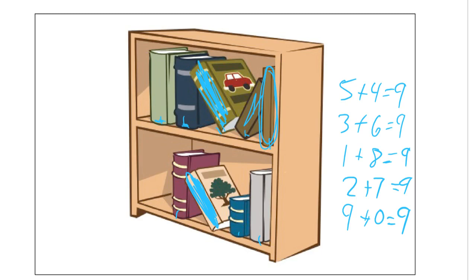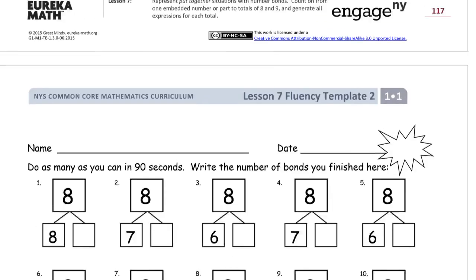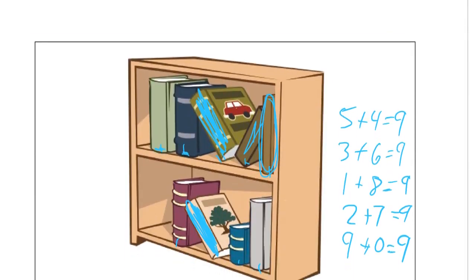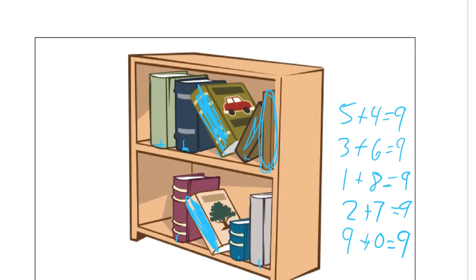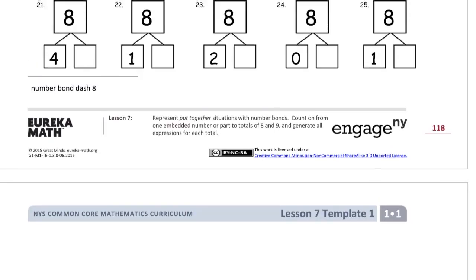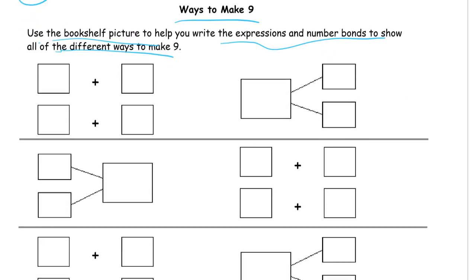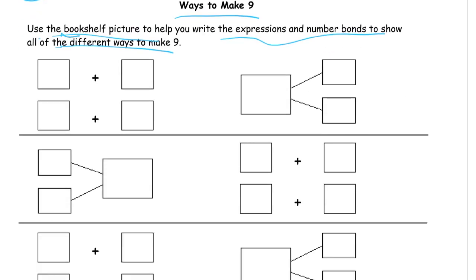And that can just get you started on this. And you can use those expressions, those number sentences we just wrote, 5 and 4, 3 and 6, 1 and 8, 2 and 7, 9 and 0. Or any other way you can find a sort to make those combinations. You might not need the picture to do this. But that's the bookshelf picture that they're talking about here in the directions.